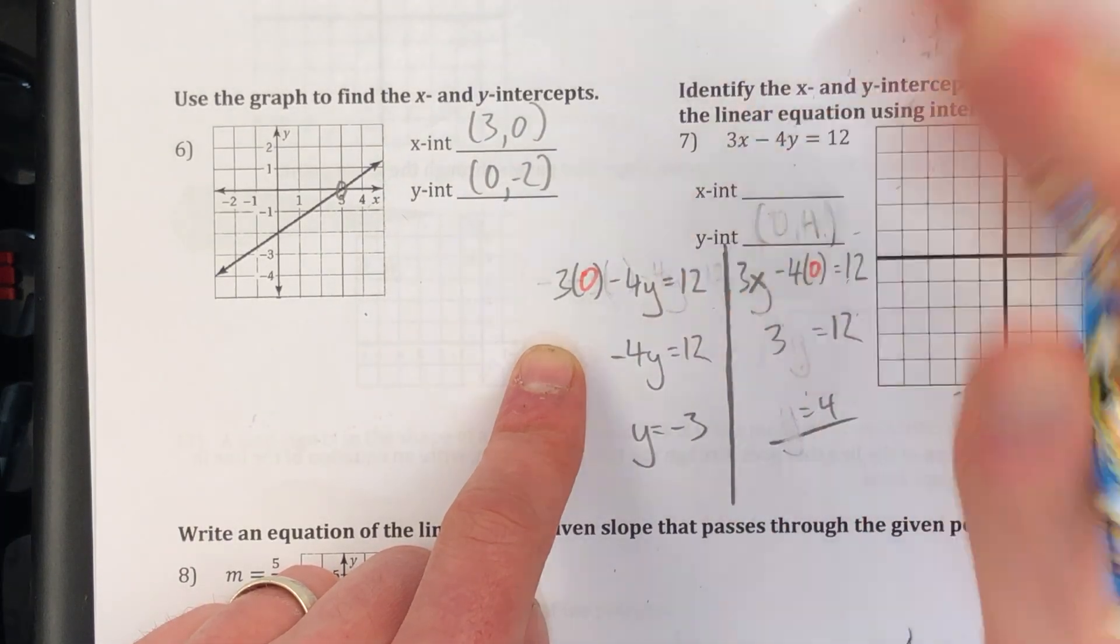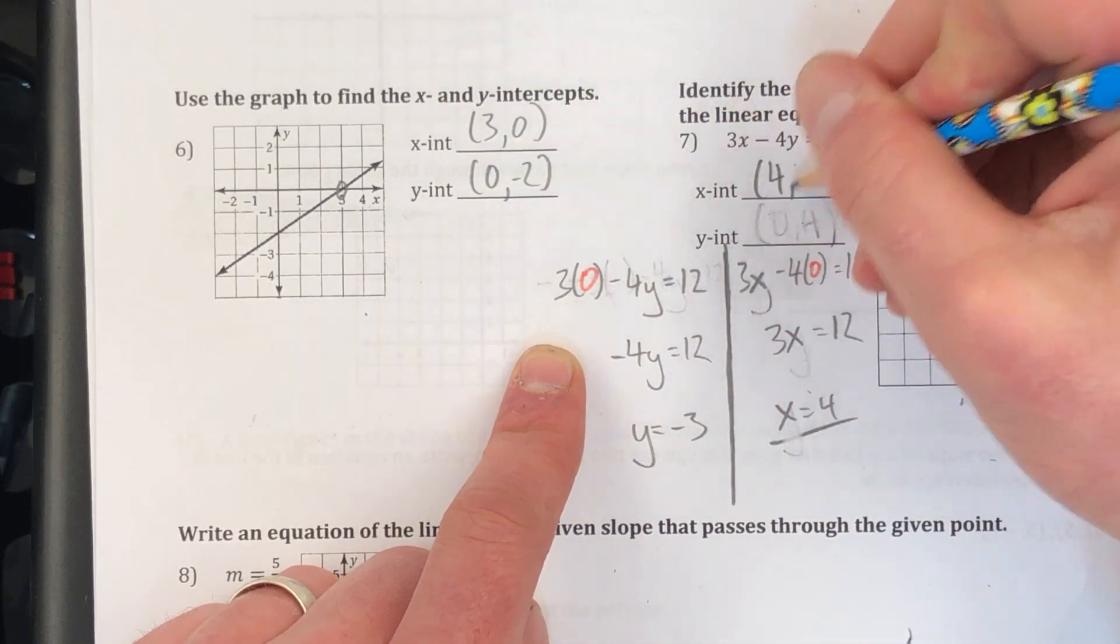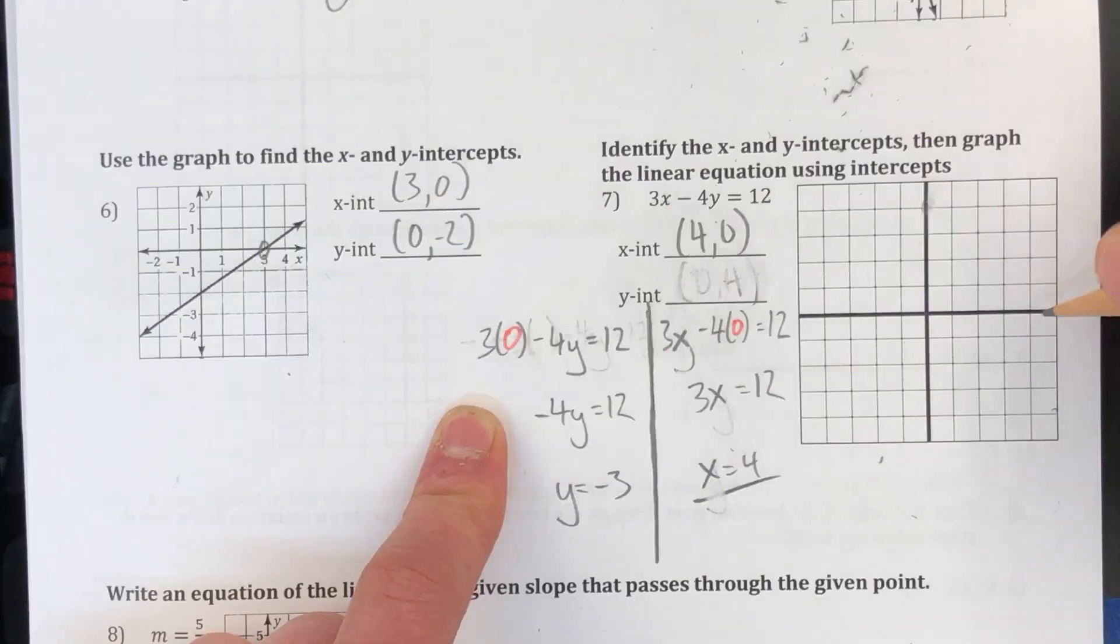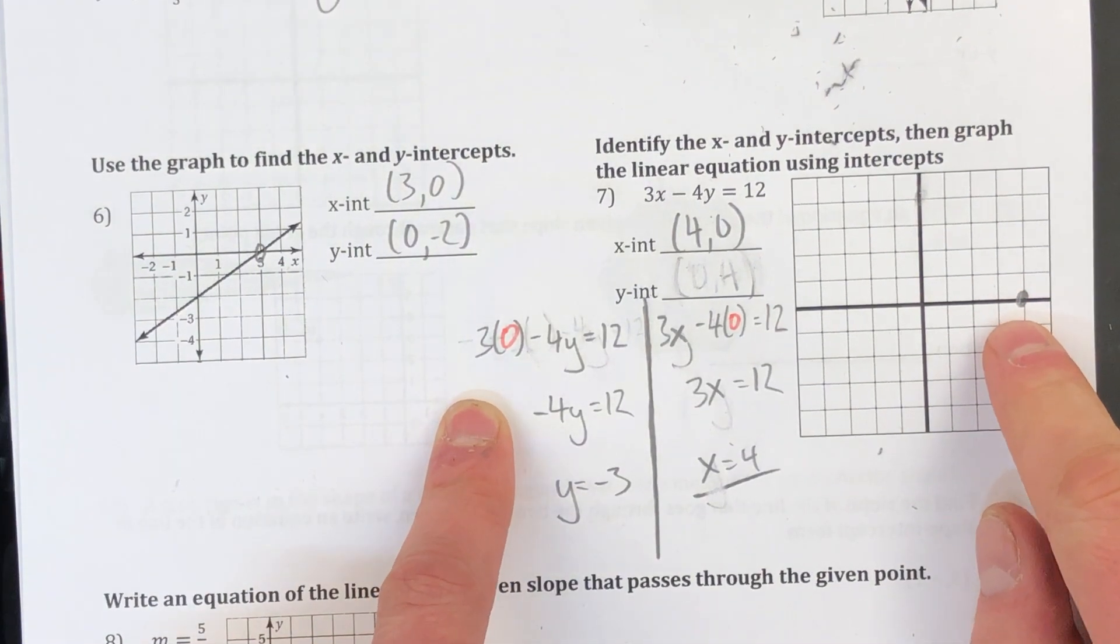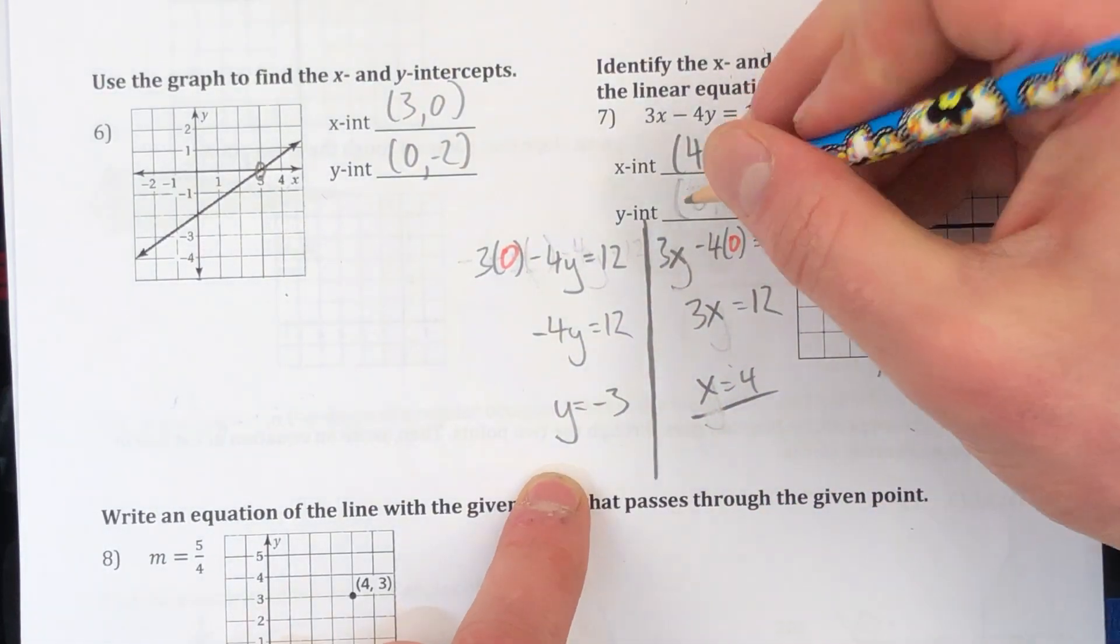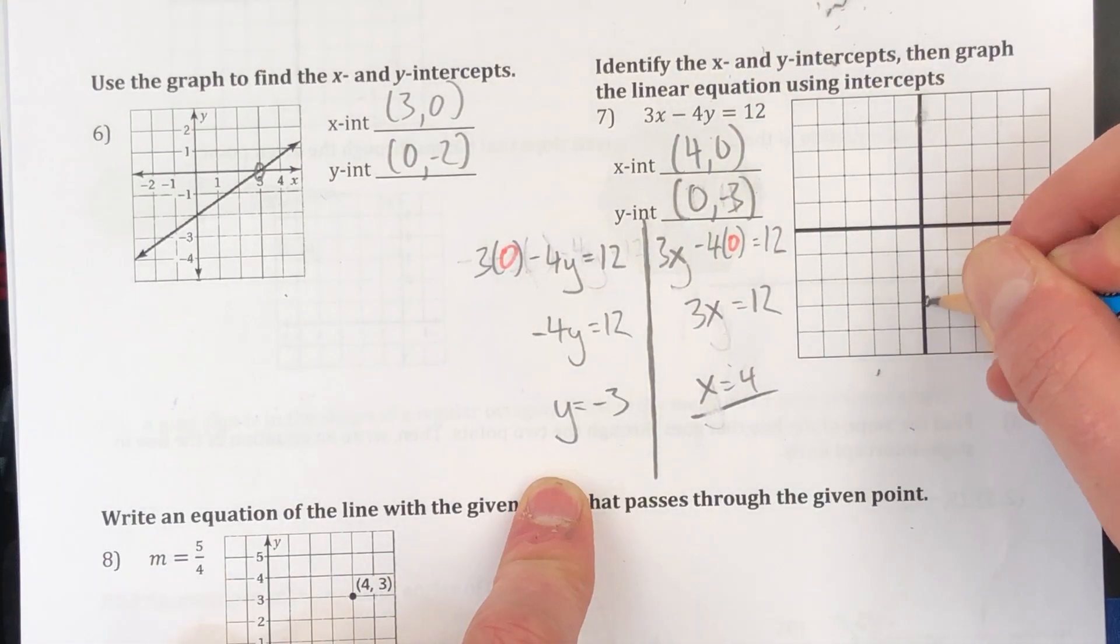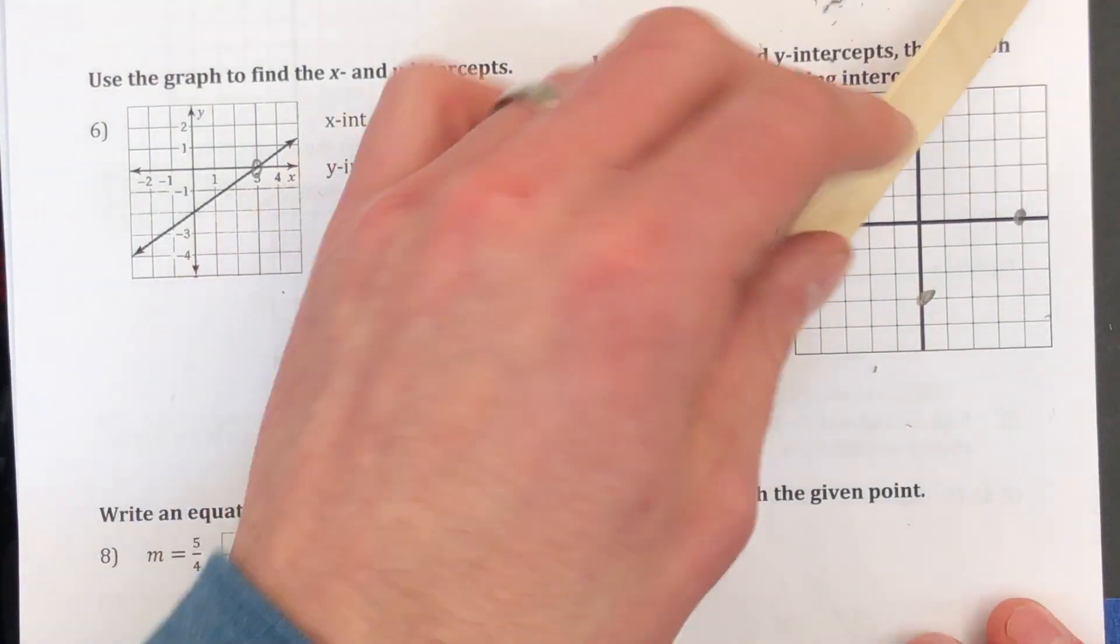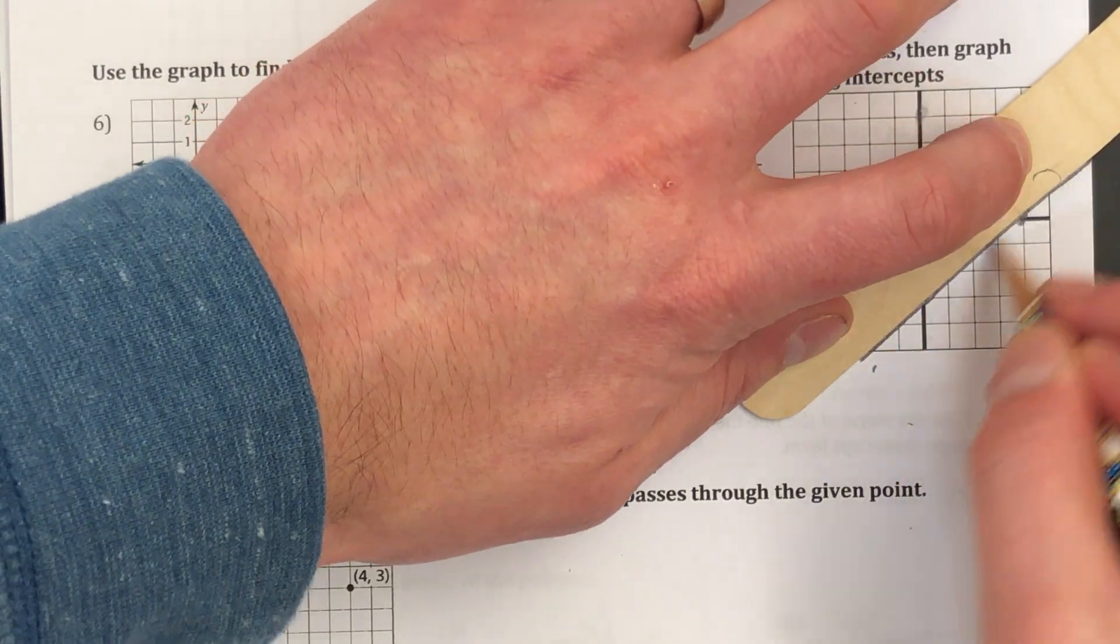Perfect video until the last page. x. My x-intercept is 4, 0. 1, 2, 3, 4. There's my x-intercept. And then my y-intercept is negative 3. Okay, there we go. 0, negative 3. 1, 2, 3 on the y-axis. And now I can use a straight edge here to graph my line, finding the intercepts.